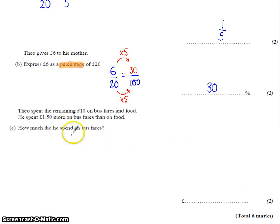It says Theo spent the remaining £10 on bus fares and food, and he spent £1.50 more on bus fares than on food. So if we think, some people did, if we just got the £10 and we split it in half just to start with because we're sharing it between those things, it's £5 equally.